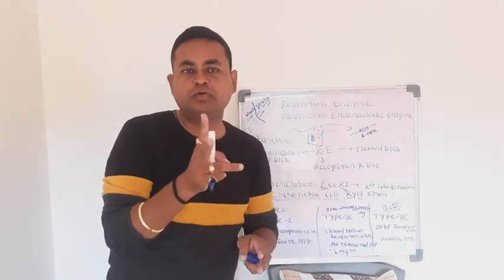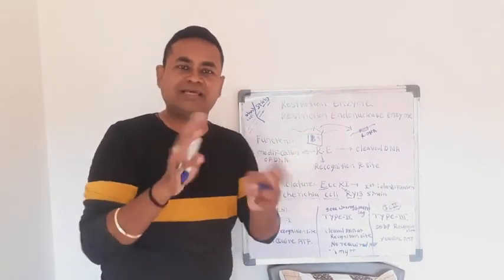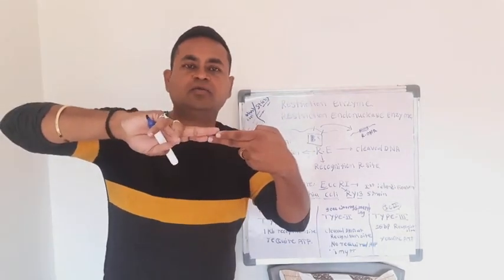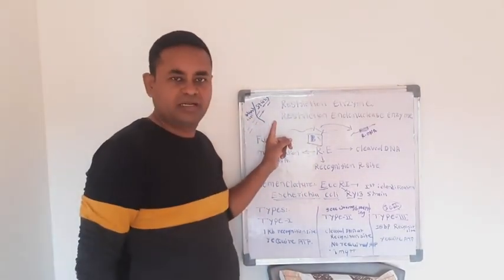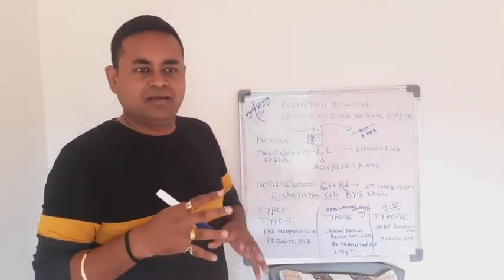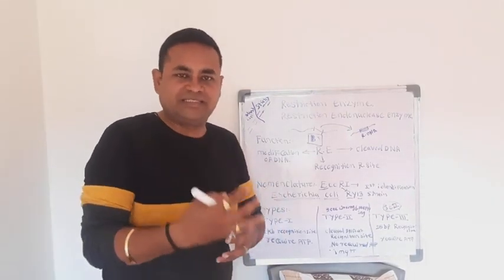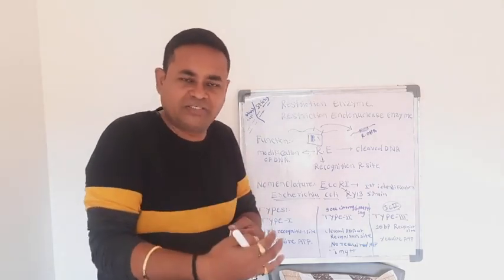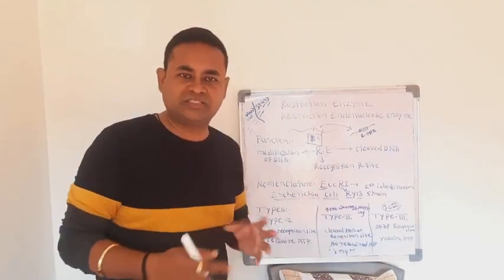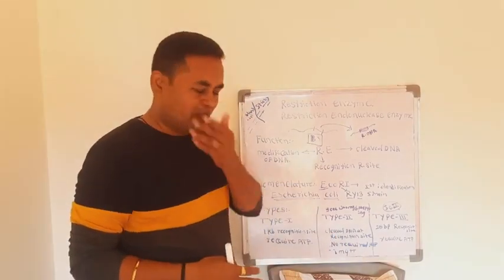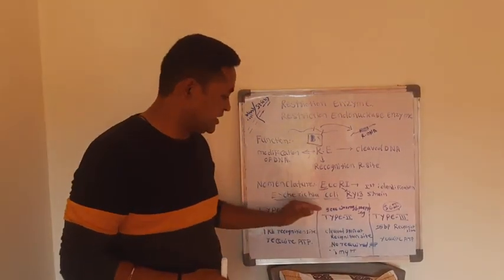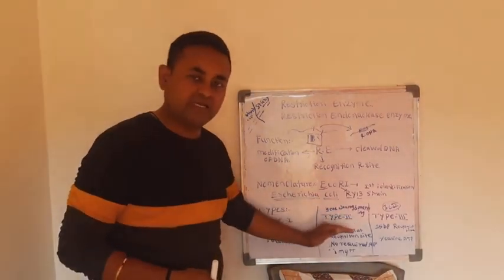This is the general idea about restriction enzymes. The cohesive cut or sticky cut means cutting in a staggered manner, and the blunt cut means cutting directly. These restriction enzymes have three types: Type I, Type II, and Type III, which are isolated mostly from bacterial cells.